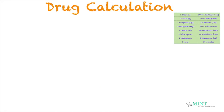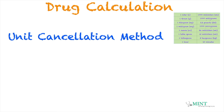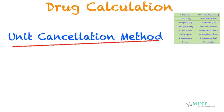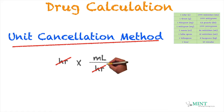The method that we will be using for our drug calculation is the unit cancellation method. In this method, we are simply going to plot our given values in a way that we are able to cancel out units, so we will be left with the unit of the answer the problem is asking. This is easier when we apply it to a problem.